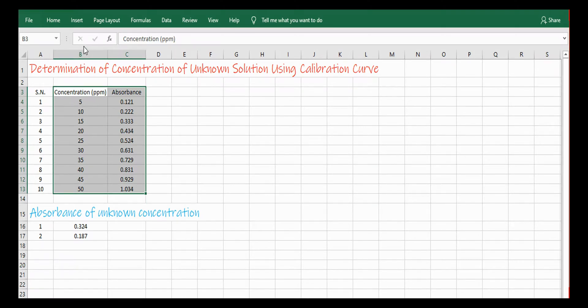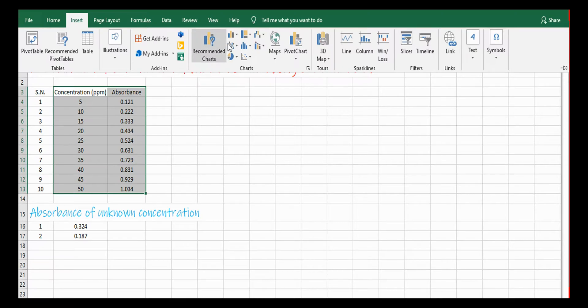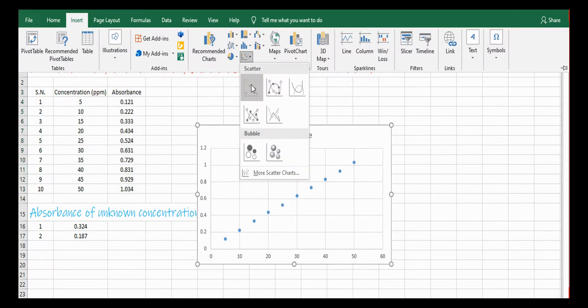Now select these two columns of different concentration and their corresponding absorbance value. Then go to Insert, and then go to Chart and select Scatter.